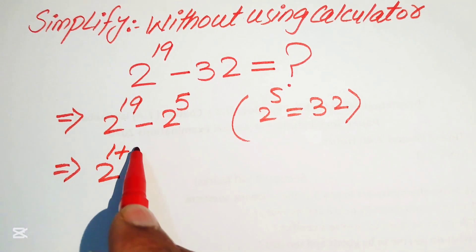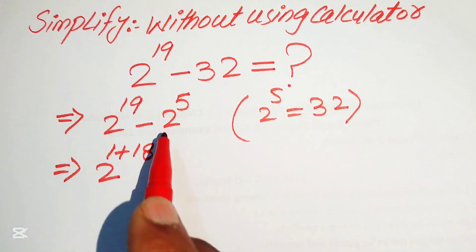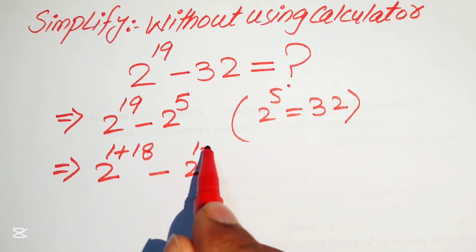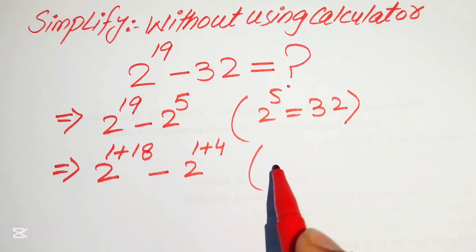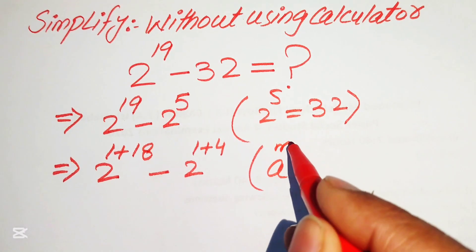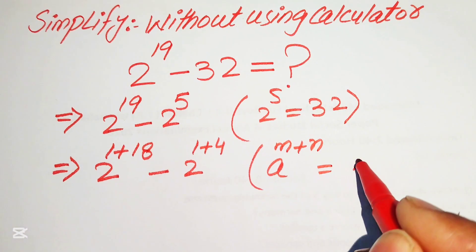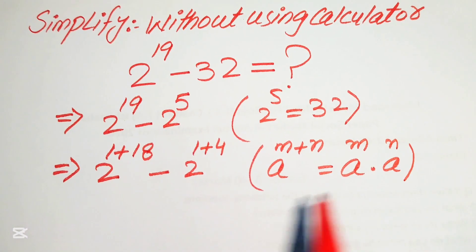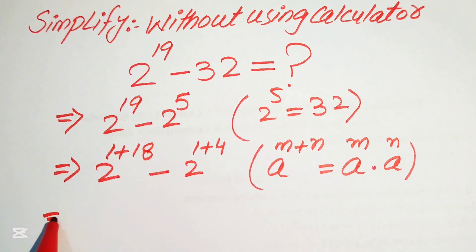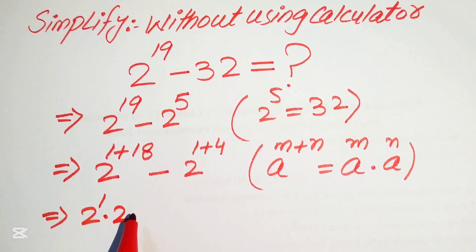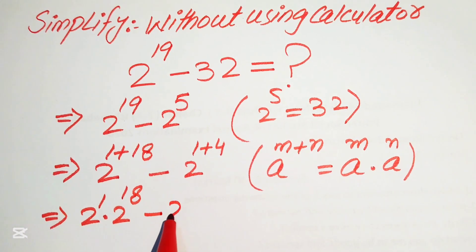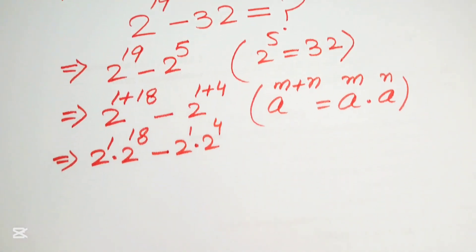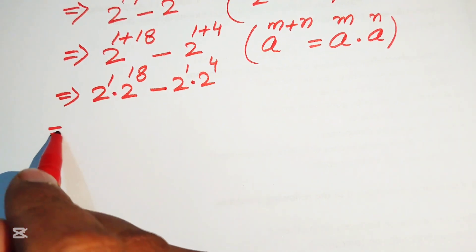After that, we need to break these two exponents. We write 19 as 1 plus 18, and we write the exponent of the second 2 to the power of 5 as 1 plus 4. We use the exponential law: a to the power of m plus n equals a to the power of m times a to the power of n. So we break the exponents and write it as 2 to the power of 1 times 2 to the power of 18, minus 2 to the power of 1 times 2 to the power of 4.